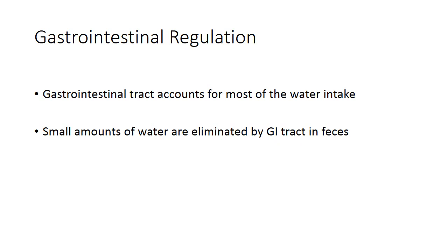The GI system accounts for how we take in most of our water — two to three liters a day — while only about 100 milliliters of water are eliminated by the GI tract in feces. The GI system is very efficient at absorbing almost all ingested water under normal circumstances. However, should the patient not be taking in fluid, or have diarrhea causing large losses of water in feces, this usually efficient mechanism will be disturbed.